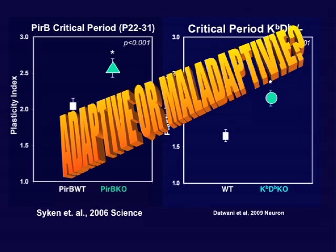We can measure this quantitatively, done blind to genotype. The knockout mice lacking PirB during the critical period have more plasticity than wild-type mice. We then reasoned: if MHC class 1 ligands are binding PirB and signaling such that knocking out PirB removes the brake, then deleting the ligands K and D should also produce extra ocular dominance plasticity — and that's exactly what we found in a separate set of studies. These results suggest MHC class 1 working through PirB regulates plasticity by acting as a brake.